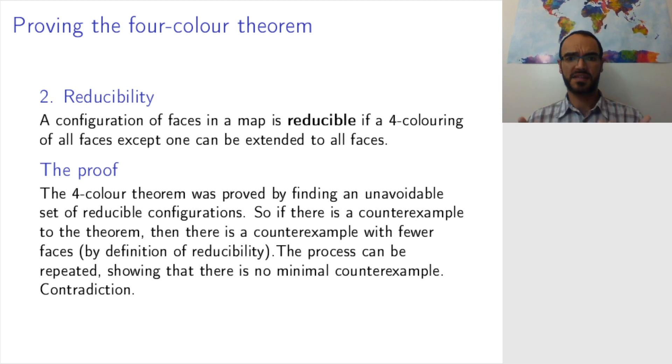And this is difficult because how do you find this unavoidable set of reducible configurations? This is where computer work is required to check that this exists and it was probably a huge set of configurations, not just three like rectangle, triangle, pentagon, but much more.